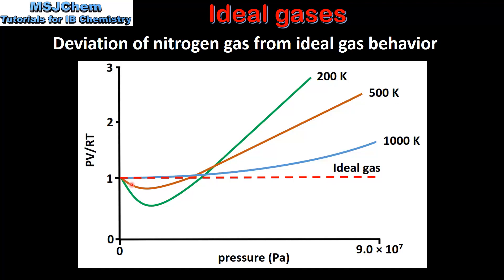The other colored lines show the deviation of nitrogen gas from ideal gas behavior at different temperatures and pressures. Looking at the green curve on the graph, we can see that it represents the greatest deviation from ideal gas behavior. The conditions that produce this green curve are low temperature and high pressure.